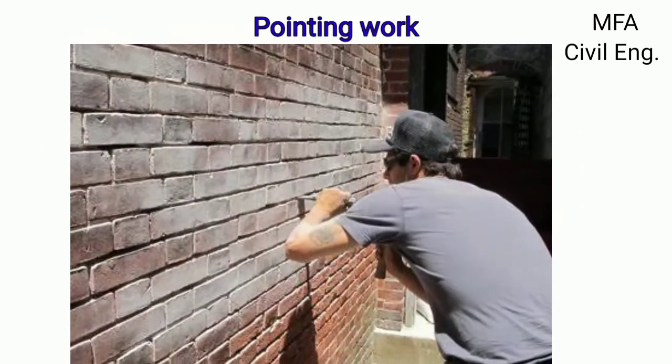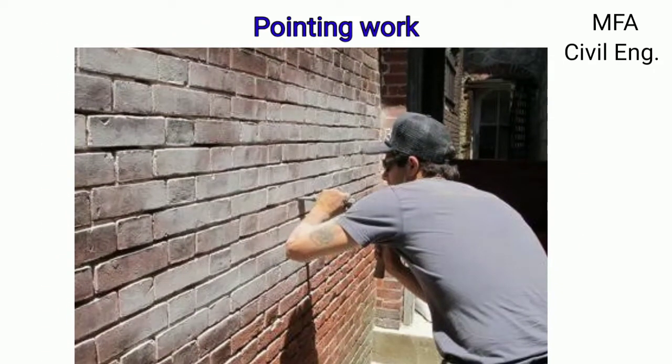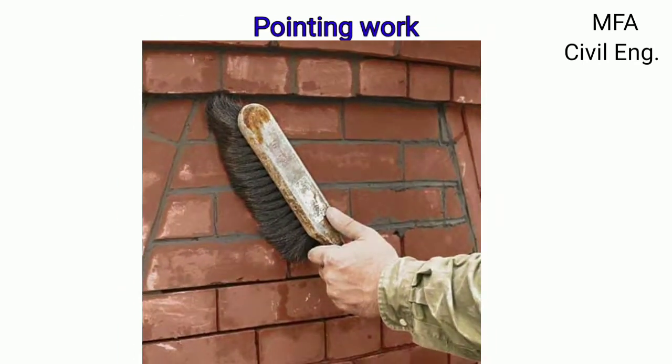All mortar joints in masonry are raked out to a depth of 10 to 15 mm with the help of a pointing tool. Then dust and loose mortar are thoroughly cleaned. The joints and surface are washed with clean water and kept wet for some time.